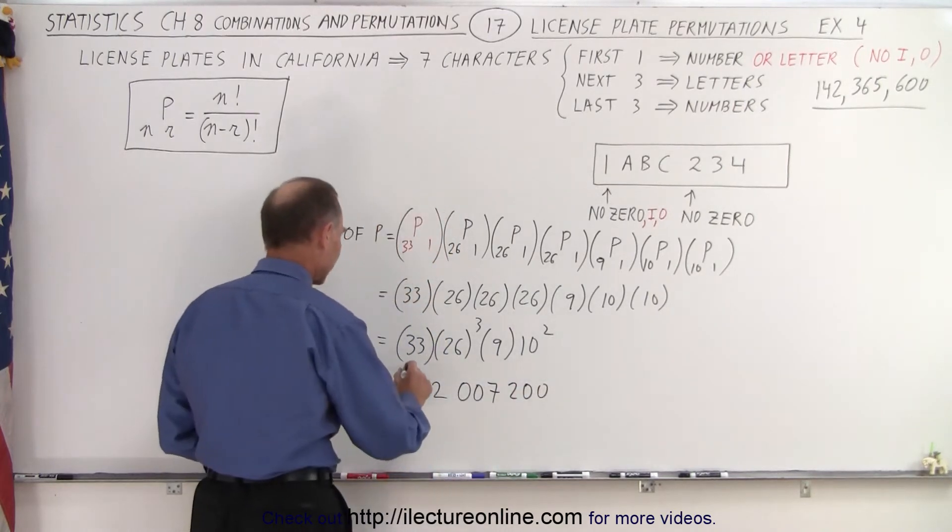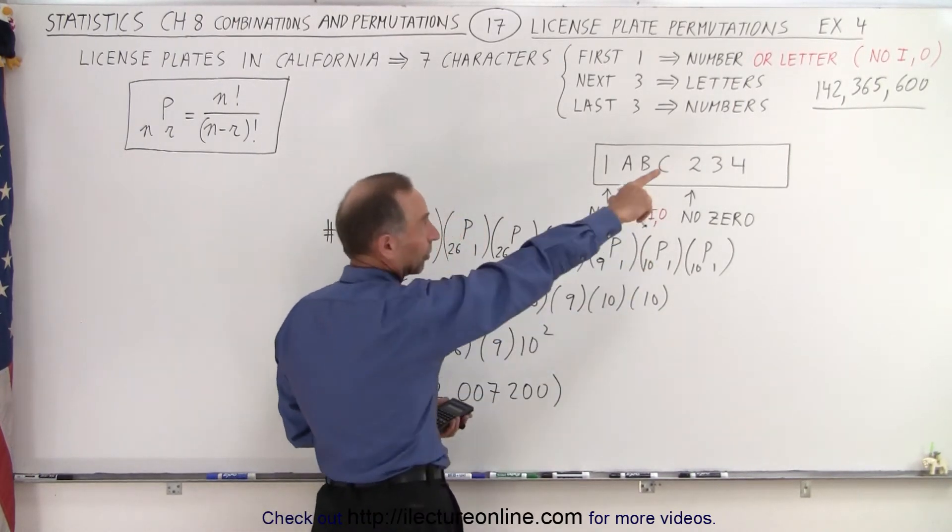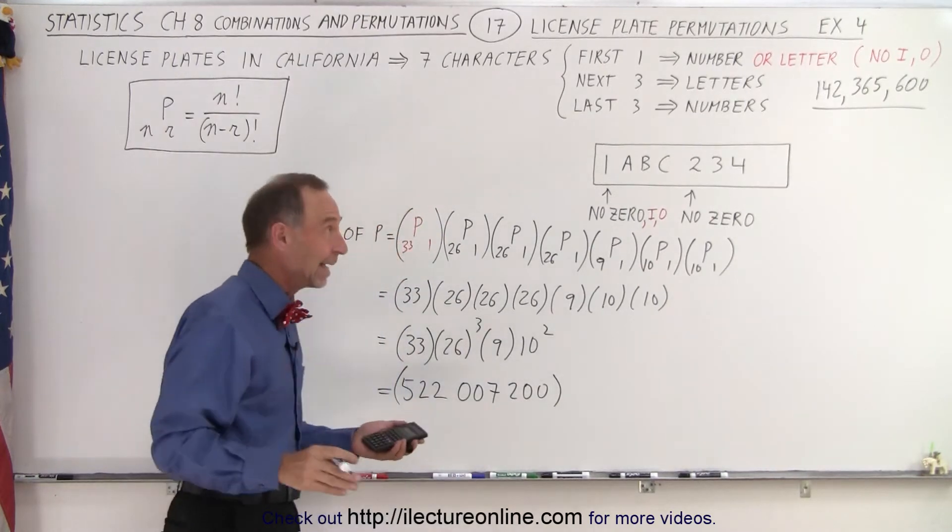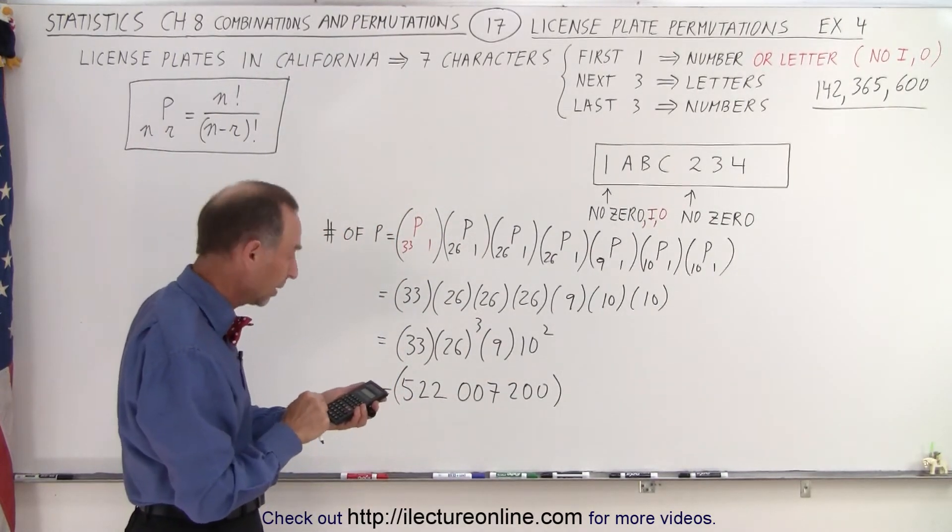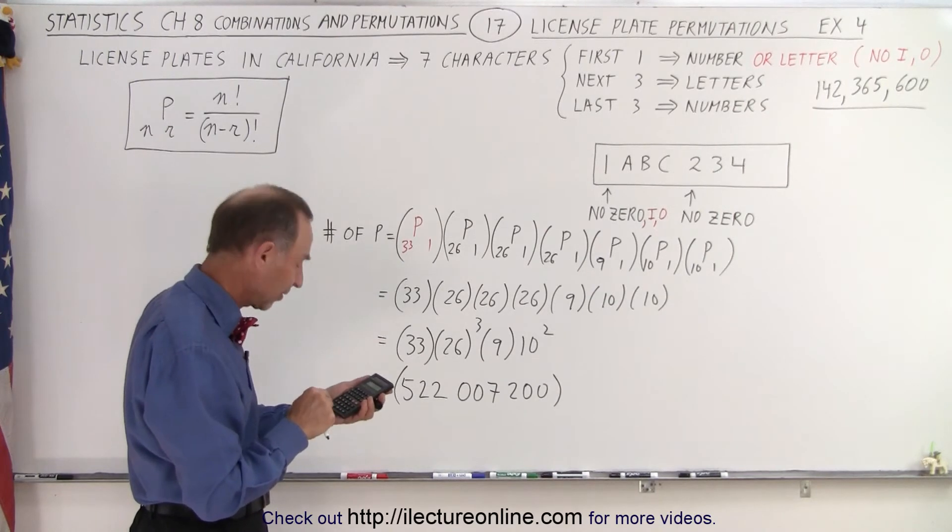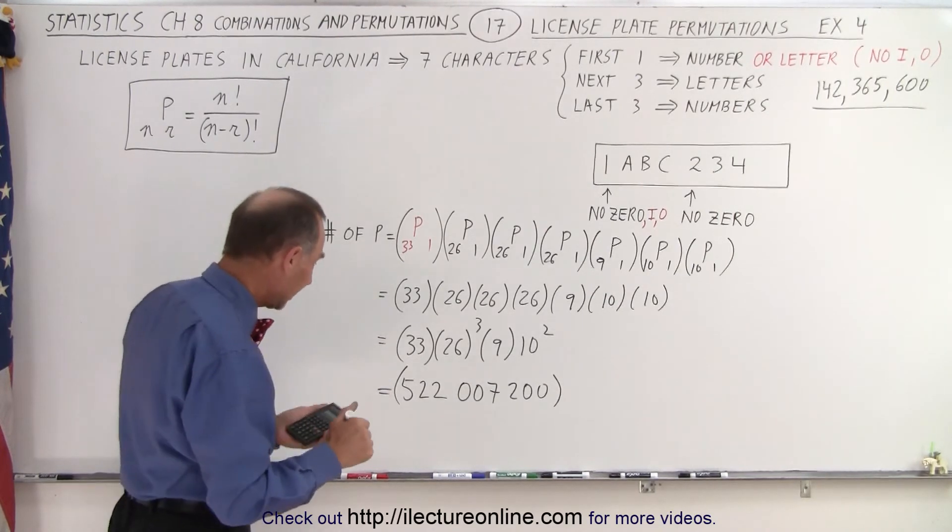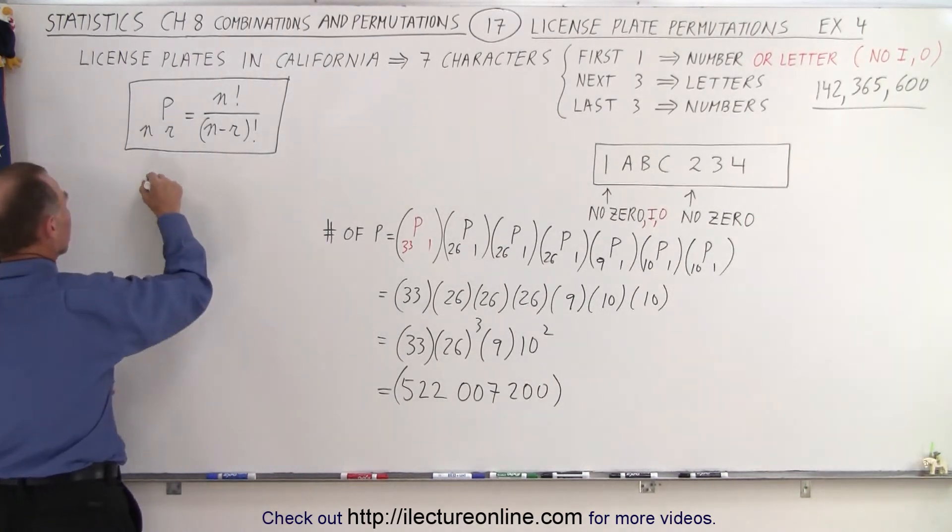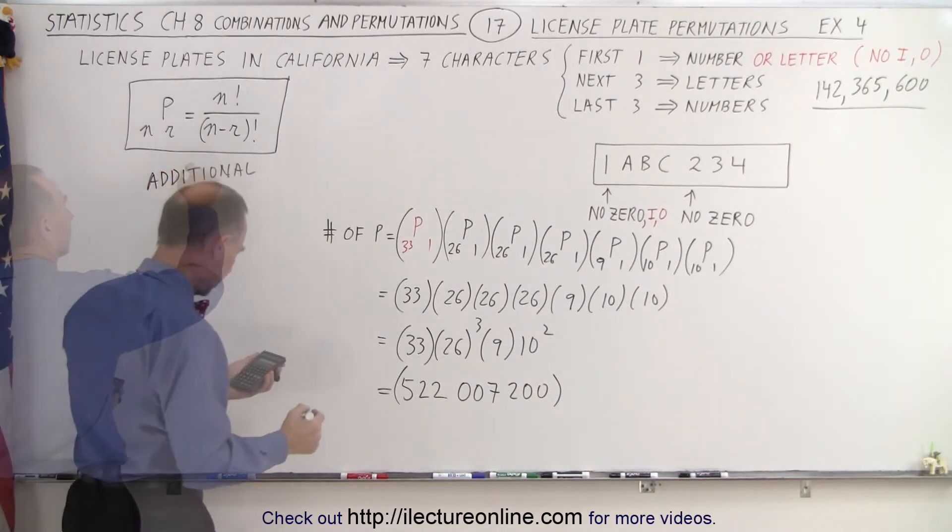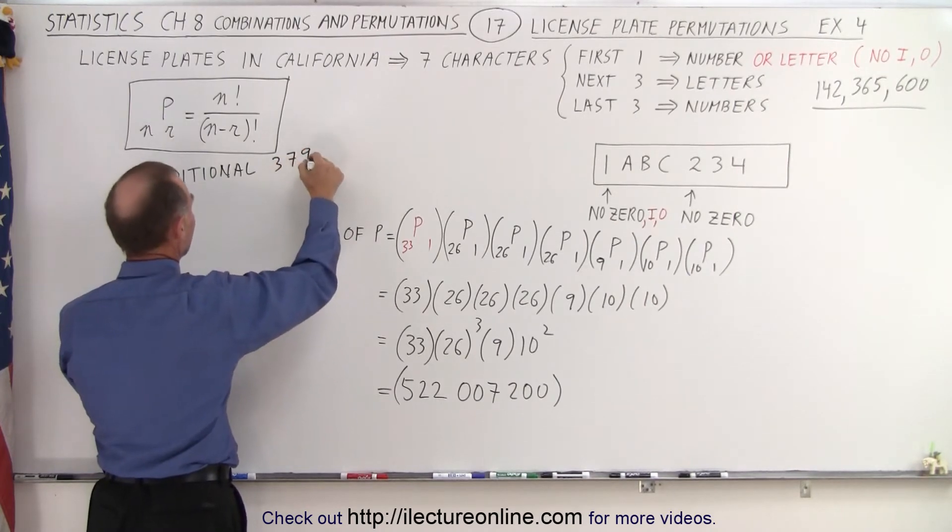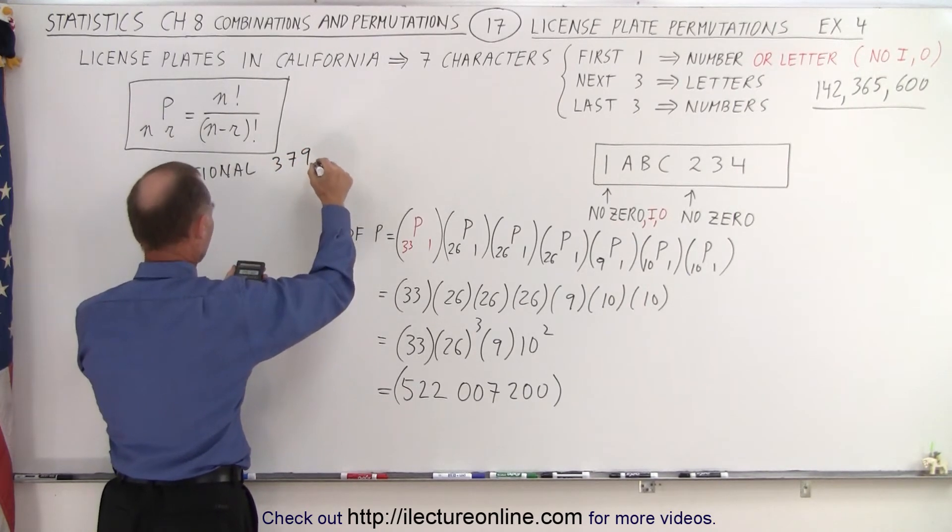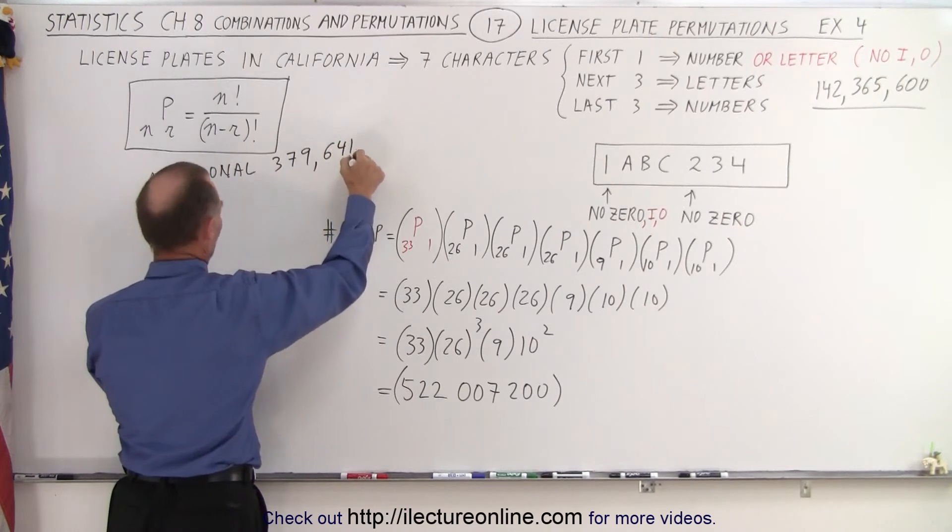Now if we subtract from that the ones we already had, because we can't reuse those, so minus 142,365,600, that leaves us with an additional 379,641,600.